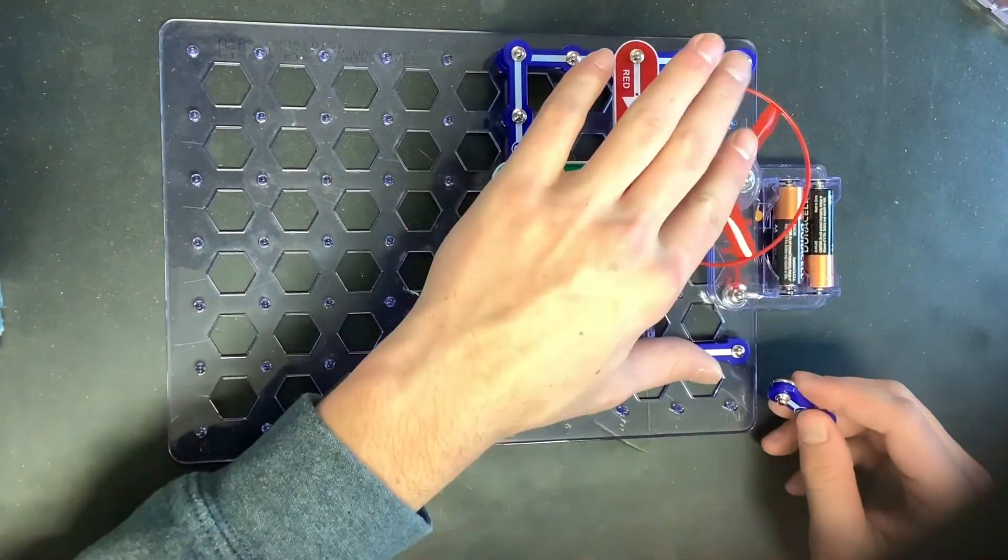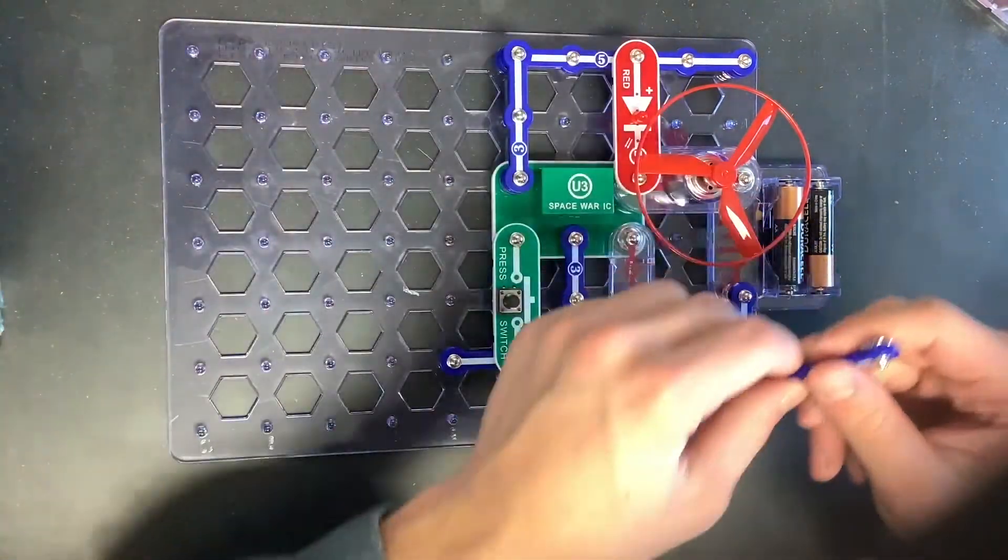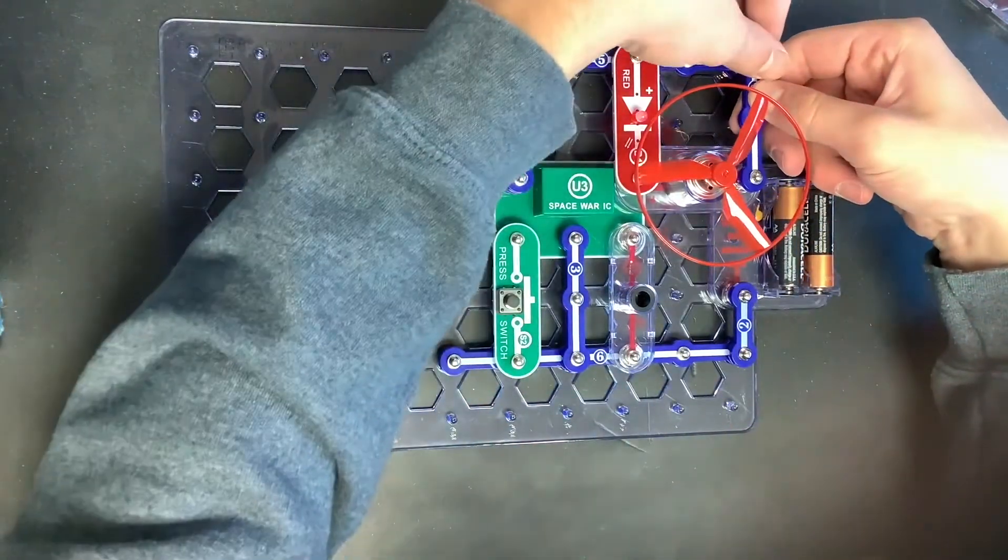And then this will basically act as our switch for the circuit. And then we will connect that right here. And then finally, we'll add a three-piece connector out there.